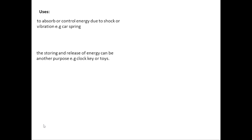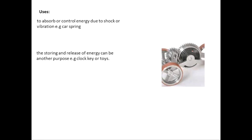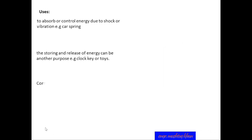Another use of the spring is that it can store and release energy. Its examples include setting a clock alarm and use in toys. When this toy moves forward, the spring will deform and energy will be stored inside it. When released, the toy moves back due to the stored energy. Similarly, energy is stored in the spring of a clock to set the alarm — when that time is reached, the energy is released and sound energy is produced.